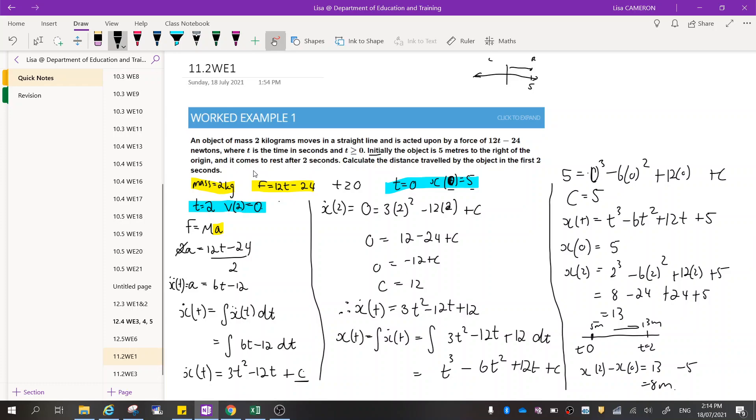An object of mass 2kg moves in a straight line and is acted upon by a force of 12t minus 24 newtons, where t is the time in seconds.